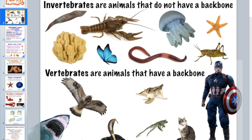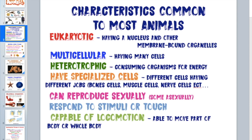Key terms to know: eukaryotic, multicellular, and heterotrophic — we've learned these multiple times. Specialized cells refers to cells that have different jobs: bone cells make bones, muscle cells make muscles, and nerve cells make more nerve cells. Each type has a different function.